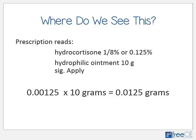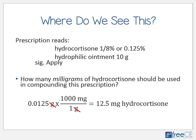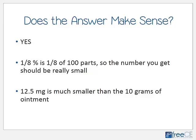To find how much hydrocortisone to use, multiply the strength by the total amount: 0.00125 times 10 grams equals 0.0125 grams. Since we need milligrams, set up a dimensional analysis conversion: 0.0125 grams times (1000 milligrams / 1 gram). The grams cancel out, giving us 12.5 milligrams of hydrocortisone.